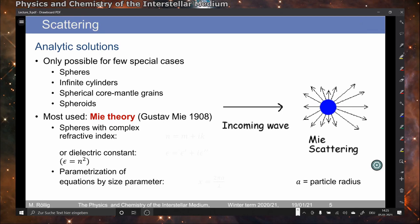Now how to actually solve this generally, for example finding an analytic solution to the scattering problem, this is only possible for a few special cases. For example for spherical grains, or for infinite cylinders. It's possible for spherical core mantle grains and spheroids.